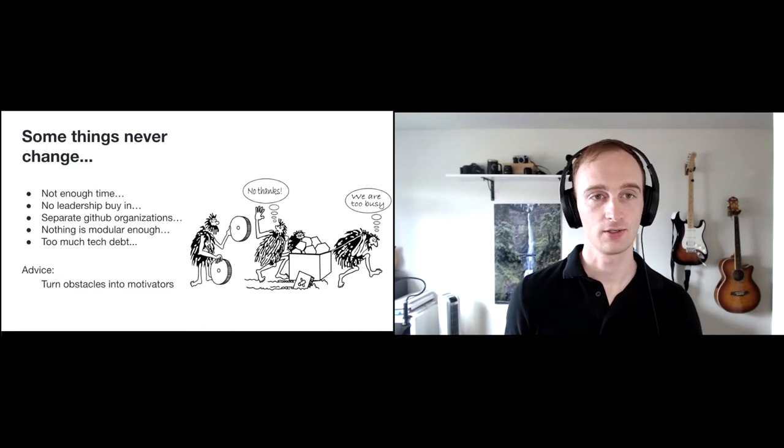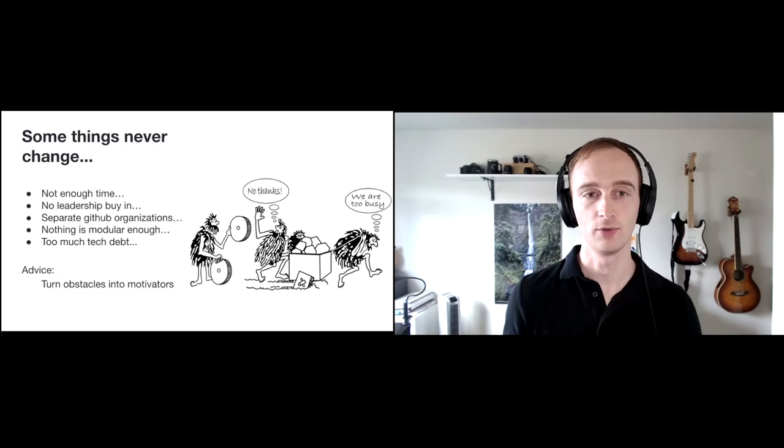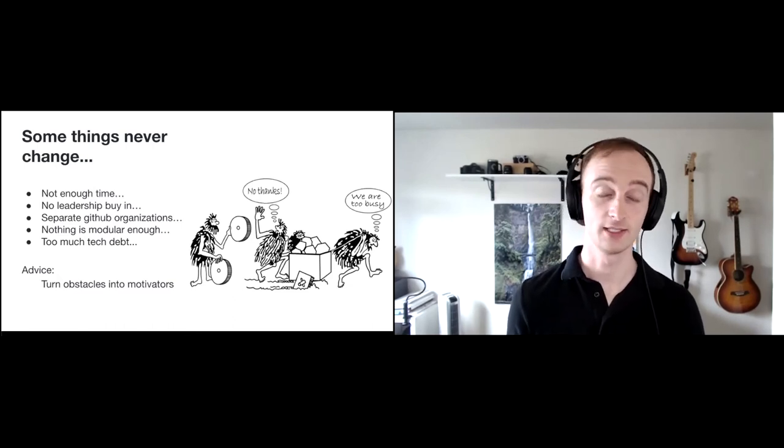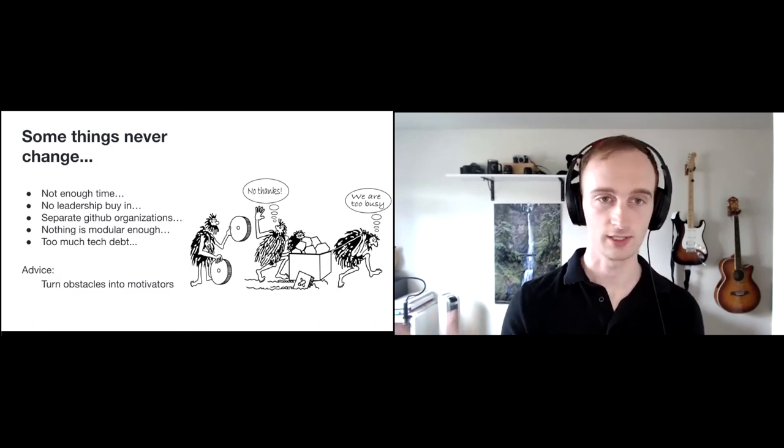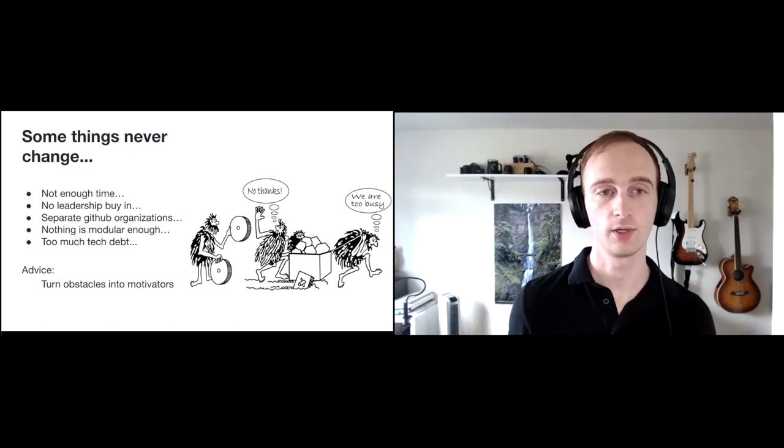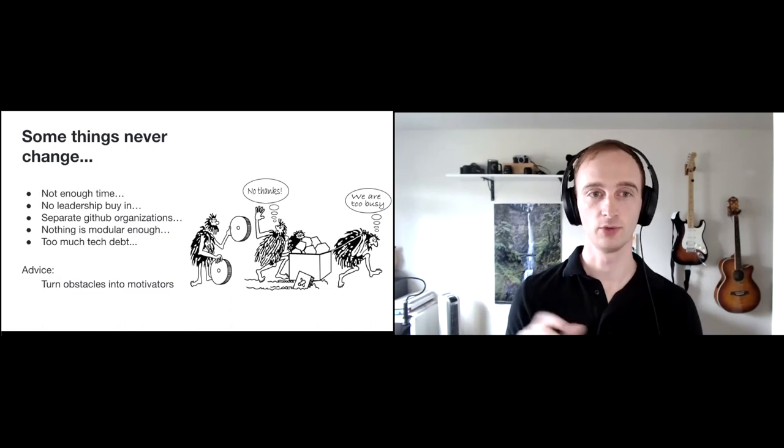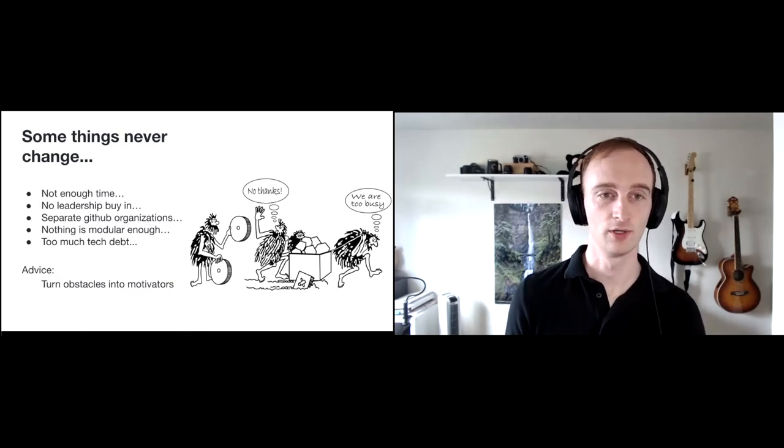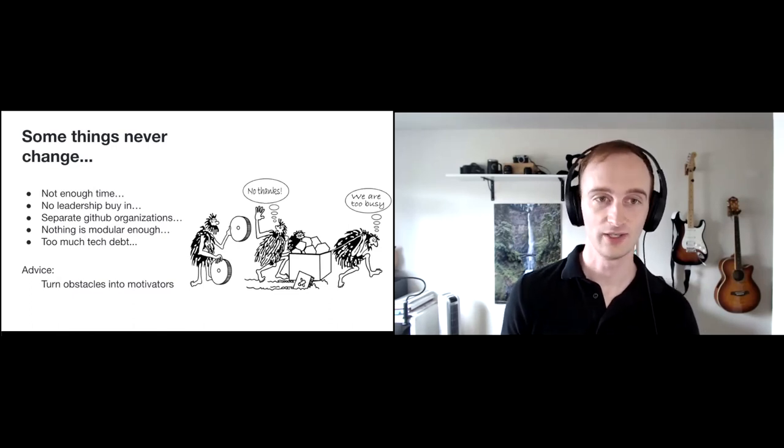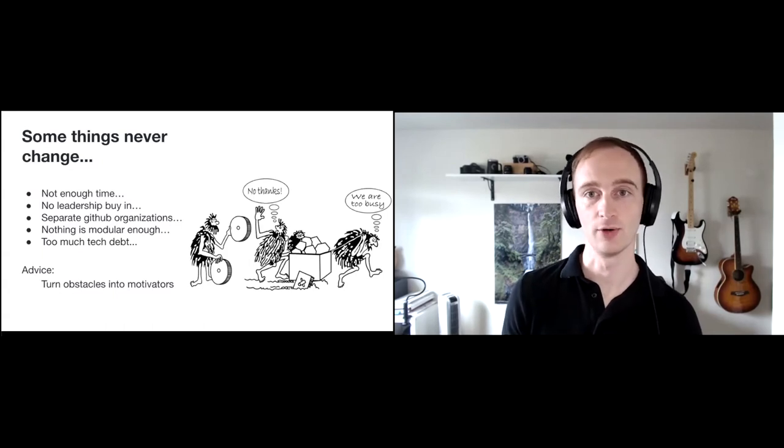These are a list of things that I hear all the time in reference to why inner source isn't going to work. This is in government and anywhere, but not enough time, no leadership buy-in. Oh, we have separate organizations. So we don't even have the ability to have the visibility into what's going on. Nothing is modular. We only write our code or contractors only write our code and monoliths. And so we can't reuse things, or there's just too much tech debt and sharing is vulnerable. So my advice to you on this is actually turn these obstacles into motivators.